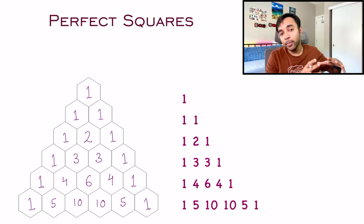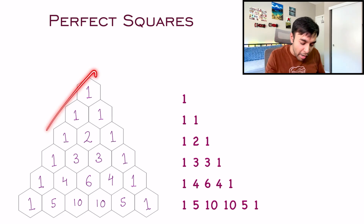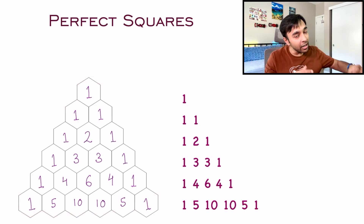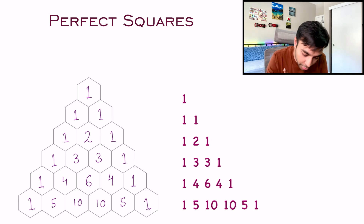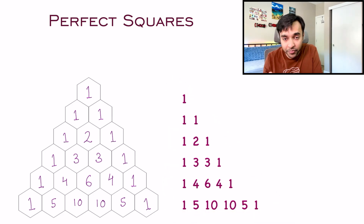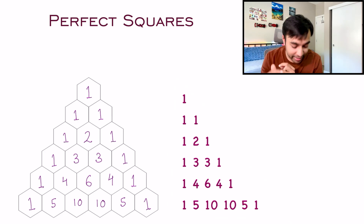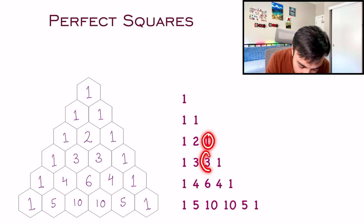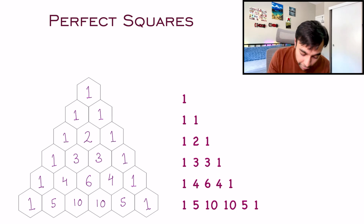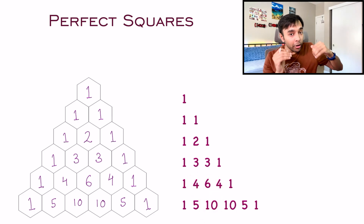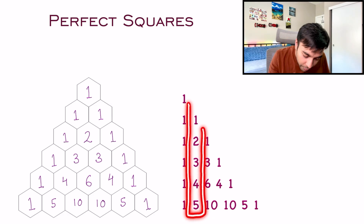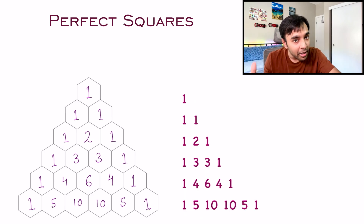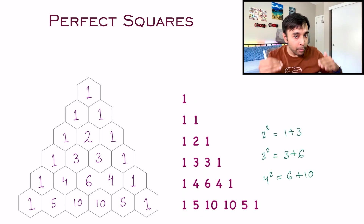One last pattern: perfect squares. If you write Pascal's triangle in a different format, you can see that 2² equals 1 plus 3, 3² equals 3 plus 6, and 4² equals 6 plus 10. So from the second column of Pascal's triangle, you can derive all perfect squares by adding adjacent elements. As you move further down the rows, this property continues to hold. There are many more hidden patterns to explore, but from a programming perspective, these are the most important concepts.